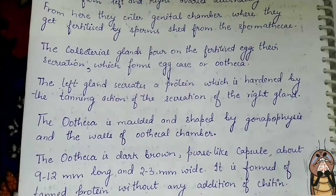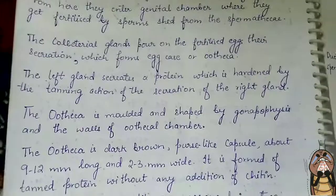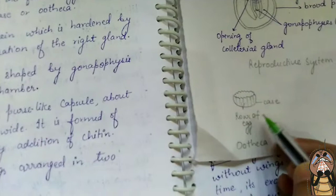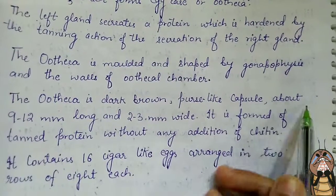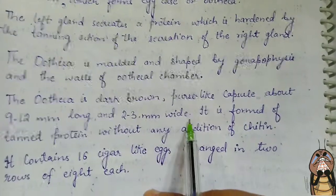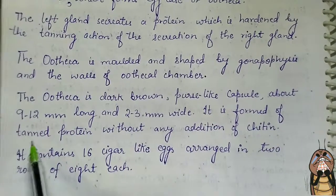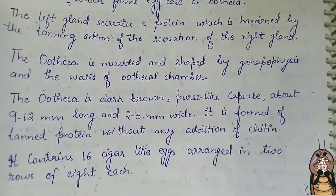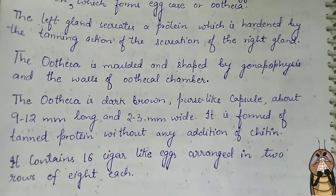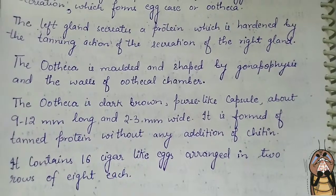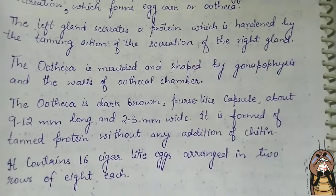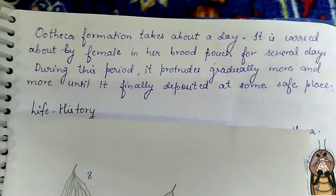The ootheca is a dark brown purse-like capsule, 9–12 mm long and 2–3 mm wide. It is formed of tanned protein without any addition of chitin. The ootheca contains 16 cigar-like eggs arranged in 2 rows, with 8 eggs in each row. The ootheca formation takes about a day.